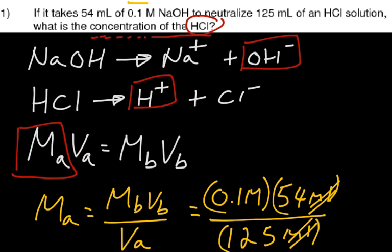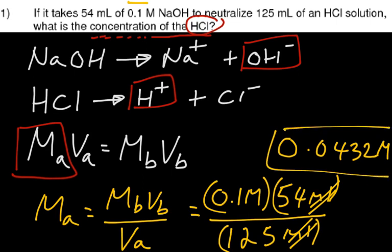And we get our calculators, 0.1 times 54 is going to be 5.4, and 5.4 divided by 125 gives me approximately 0.0432 big M. So check that, see if you've got that approximately as your answer. Later on, we'll probably use sig fig rules to round it properly, but that's the answer we have there.